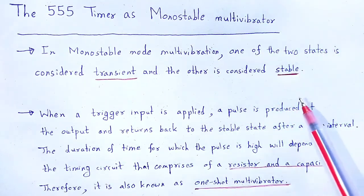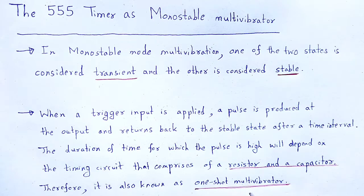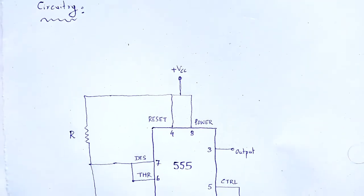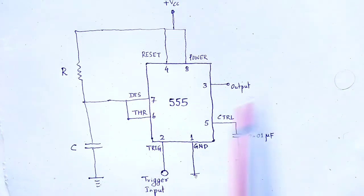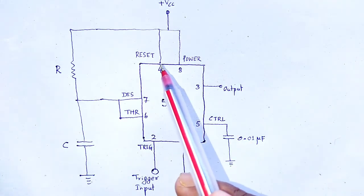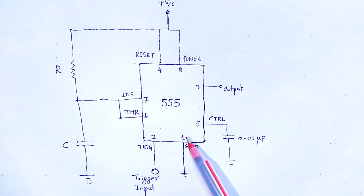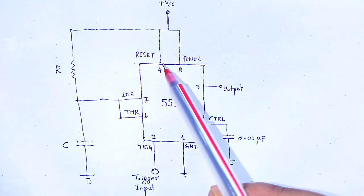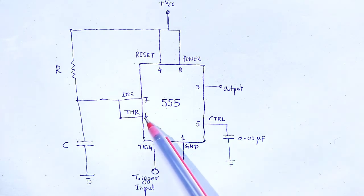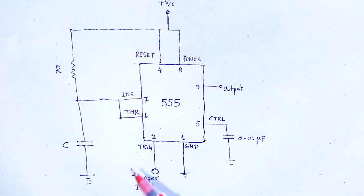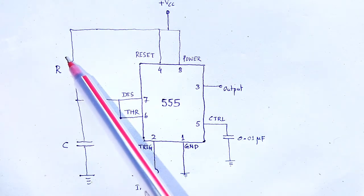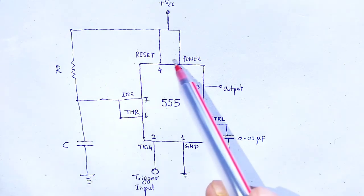Monostable multivibrator, in another word, we say it is a one-shot multivibrator. In the circuit of monostable multivibrator using a 555 timer IC, this is a 555 timer IC with 8-pin configuration: pin 1 ground, pin 2 trigger, pin 3 output, pin 4 reset, pin 5 control, pin 6 threshold, pin 7 discharge, pin 8 power.